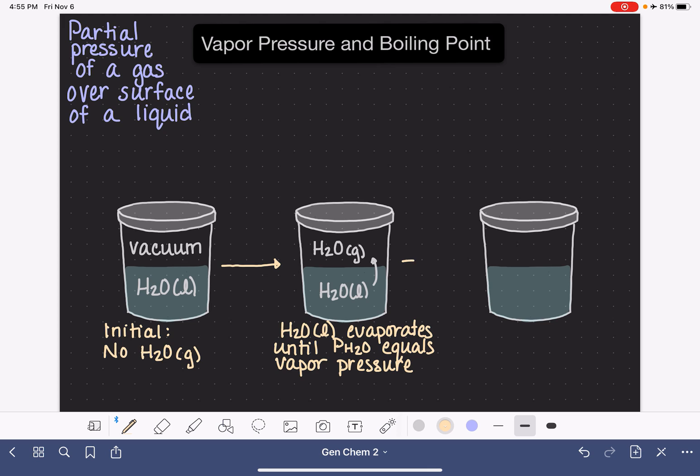Now once we get to that point where we've reached the vapor pressure, we enter into our final situation or our final conditions here which we call equilibrium. Once our system reaches that limit, the vapor pressure reaches the limit of the amount of gas that it can have up above the surface of this liquid, this process of evaporation cannot continue unless we are also simultaneously condensing some of the gas back down to the liquid phase.